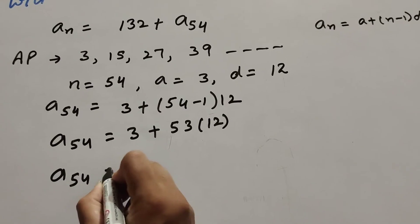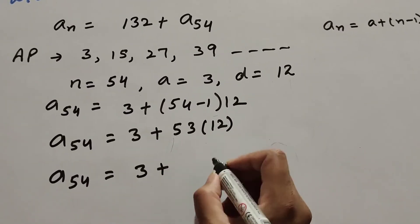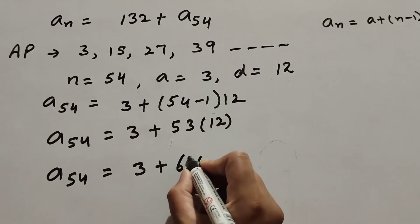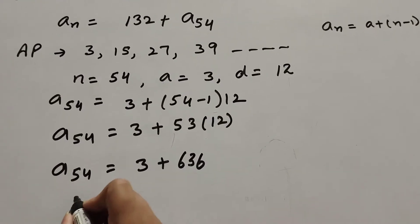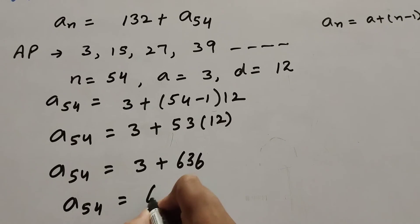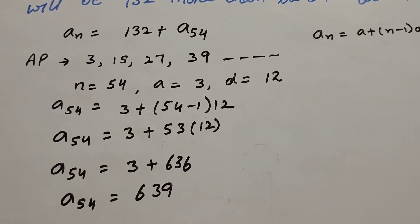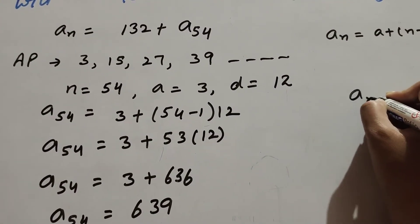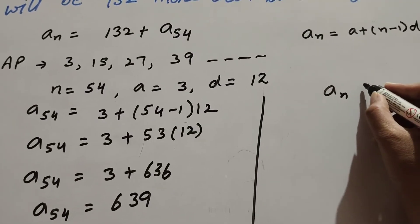So a_54 equals 3 plus 53 multiplied by 12, which equals 636. Therefore a_54 equals 3 plus 636, which is 639. So the 54th term of the AP is 639. Now we find the nth term of the AP that is 132 more than its 54th term.